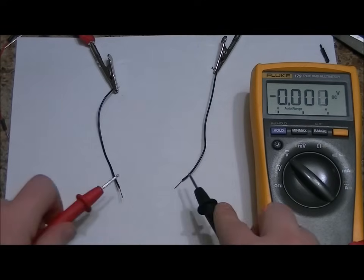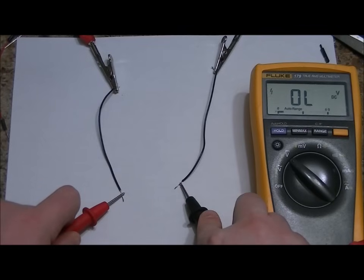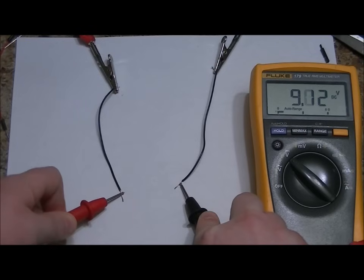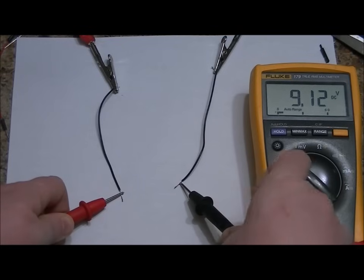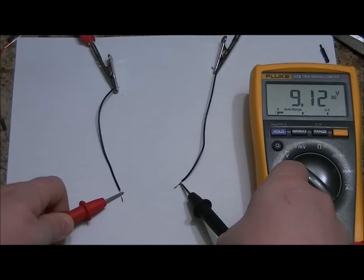What I want to see is 9.12 volts, or 9 point whatever, 9.12 volts. So now I don't see that negative sign. That means that the wire connected to my red probe is my positive 9 volts, and the wire connected to the black probe is ground, DC ground.